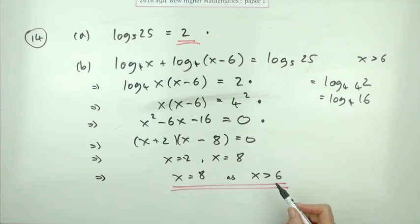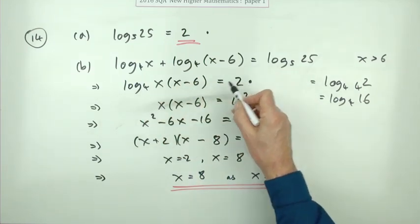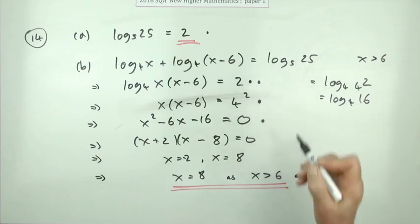The last mark was for solving with two solutions but identifying the appropriate solution. Remember, there was a mark just for stating the 2, and another mark for joining the logarithms together—so that was two marks there.